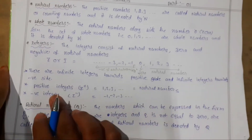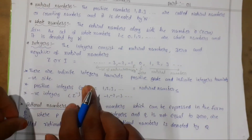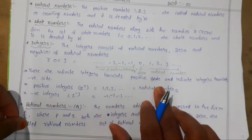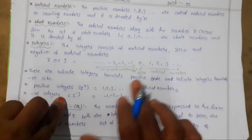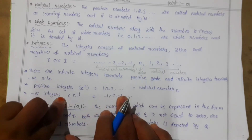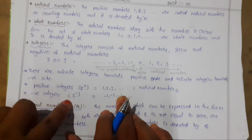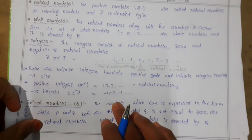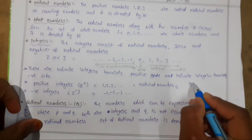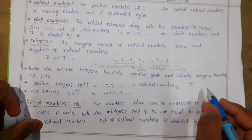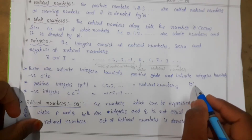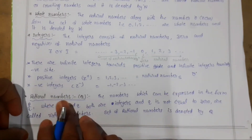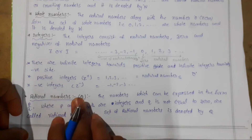Positive integers are represented by Z-plus. All the natural numbers are called positive integers. Negative integers — that is, minus one, minus two, minus three — are called negative integers, and the set of negative integers is represented by Z-minus. One important thing to understand: zero is neither positive nor negative.